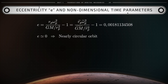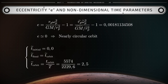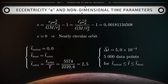The total non-dimensional time for a complete orbit is calculated as follows: t-tilde for one orbit equals the dimensional orbital period divided by capital-T, which is 5,574 seconds divided by 2,229.6 seconds, resulting in exactly 2.5 units. The non-dimensional computations are then carried out with time step delta-t-tilde equals 0.0005, which generates 5,000 data points for a complete orbit.